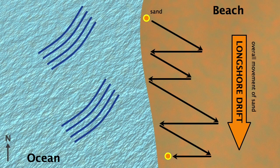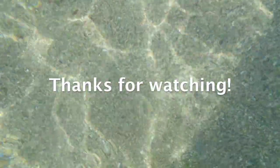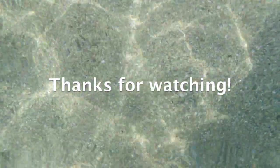Now you should be able to draw a diagram like this to explain how longshore drift works. You might also like to learn more about landforms that are formed by longshore drift — I will put some useful links in the description if you'd like to know more about this process. That's all for this video. Thank you for watching. I hope you found it interesting.